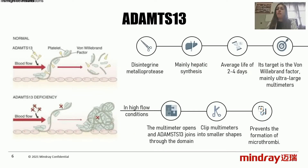ADAMTS13 is directly involved in the pathophysiology of the disease. It is a disintegrin and metalloprotease encoded on chromosome 9, with synthesis mainly hepatic. Its target is the ultra-large multimers of von Willebrand factor. Under high flow conditions, these multimers open and ADAMTS13 cleaves the peptide bond, reducing them to smaller forms and preventing the formation of microthrombi. If ADAMTS13 is absent, the ultra-large multimers aggregate platelets and form microthrombi that cause vascular occlusion, responsible for the symptoms of TTP.